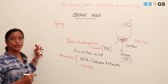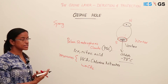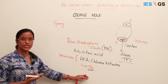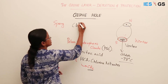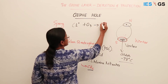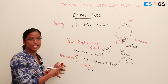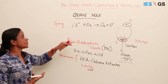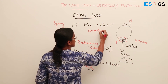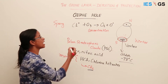Polar regions have long winters and long summers — almost six months each. In spring, sunlight starts reaching the polar region, and chlorine photochemically reacts with sunlight to release chlorine radicals. These chlorine radicals react with ozone and deplete it. The chlorine concentration here is very high, so ozone depletion takes place very fast, and the concentration of ozone becomes very low — the ozone hole is formed.